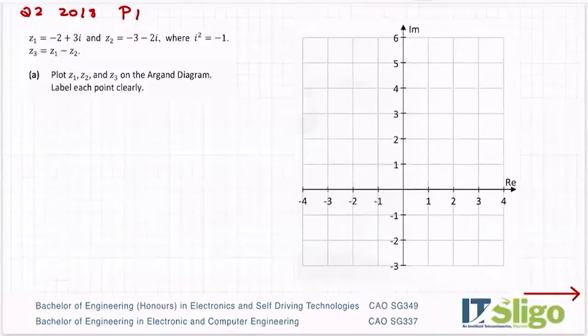Question 2, 2018, the complex number question. Z1 equals minus 2 plus 3i, Z2 equals minus 3 minus 2i, and Z3 equals Z1 minus Z2. Plot Z1, Z2 and Z3 on the Argand diagram. Label each point clearly.